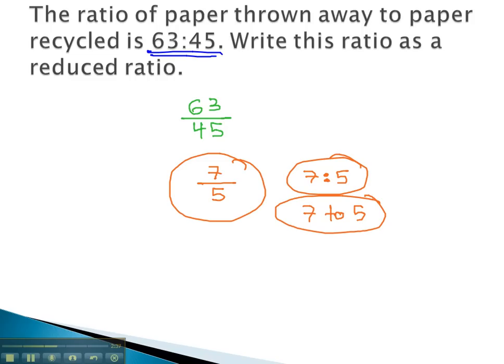All three of these are correct, representing the reduced ratio of paper thrown away to paper recycled. When we want to reduce the ratio, we simply write it as a fraction, and then reduce the fraction.